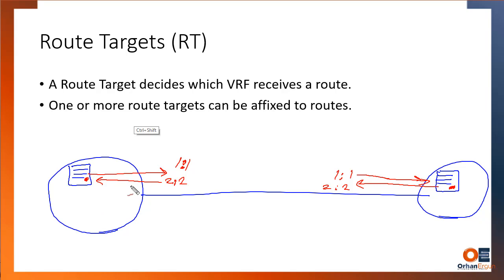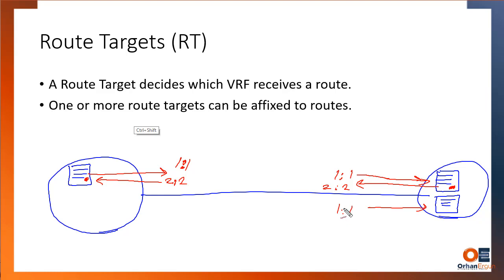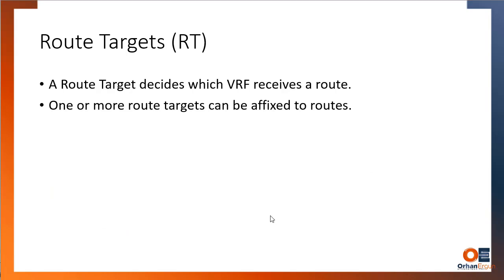It is also possible to import routes from one side into multiple routing tables on the other side. For example, if another routing table also needs routes tagged with route target 1:1, you can configure it to import 1:1 as well. There are specific scenarios where this is useful, which we'll cover in future sessions.